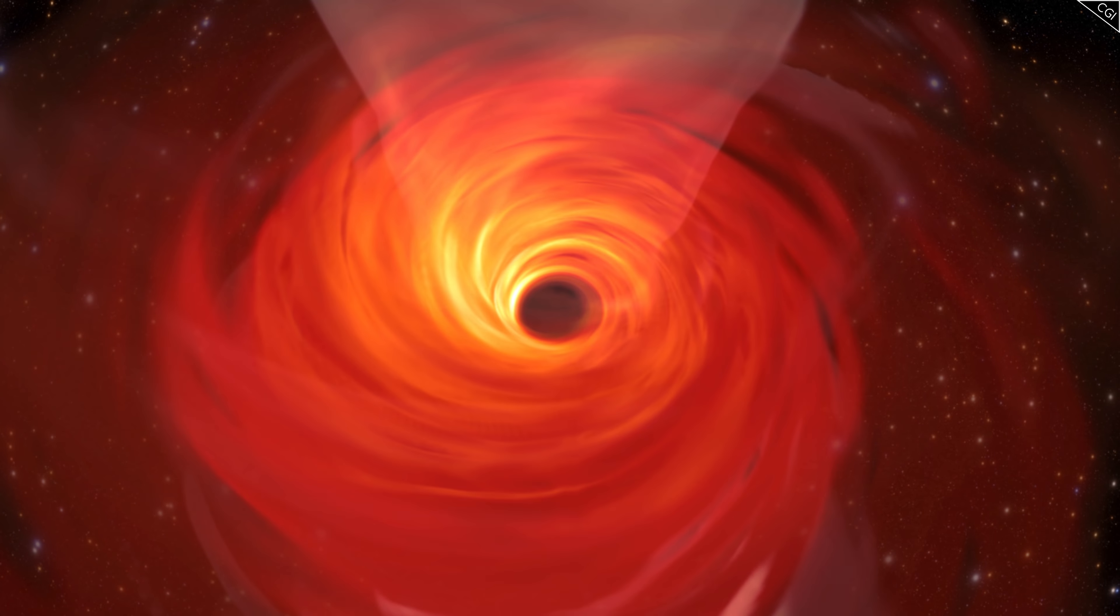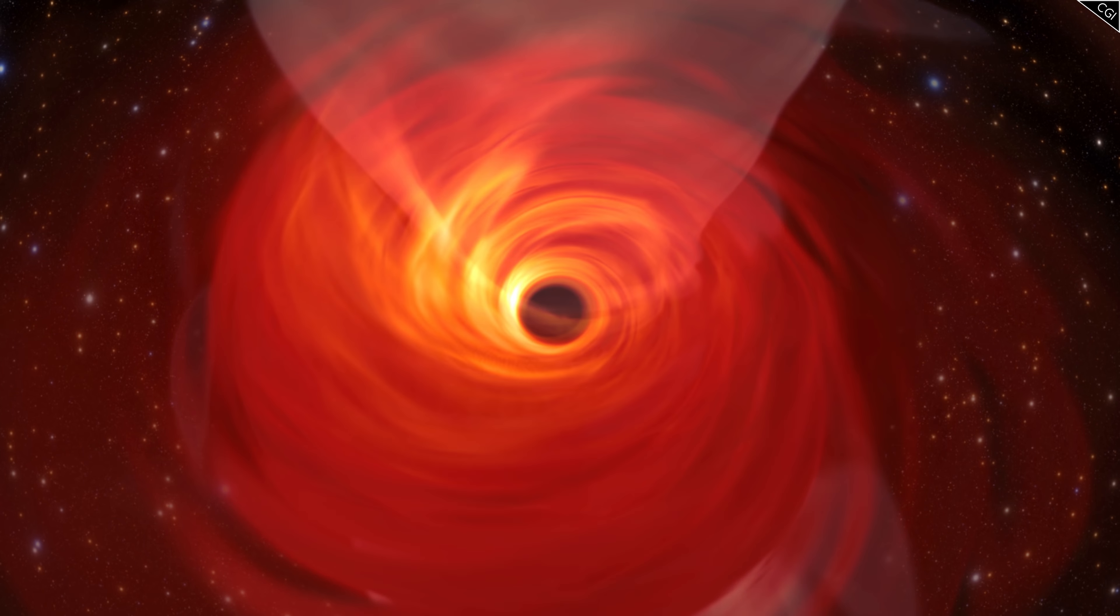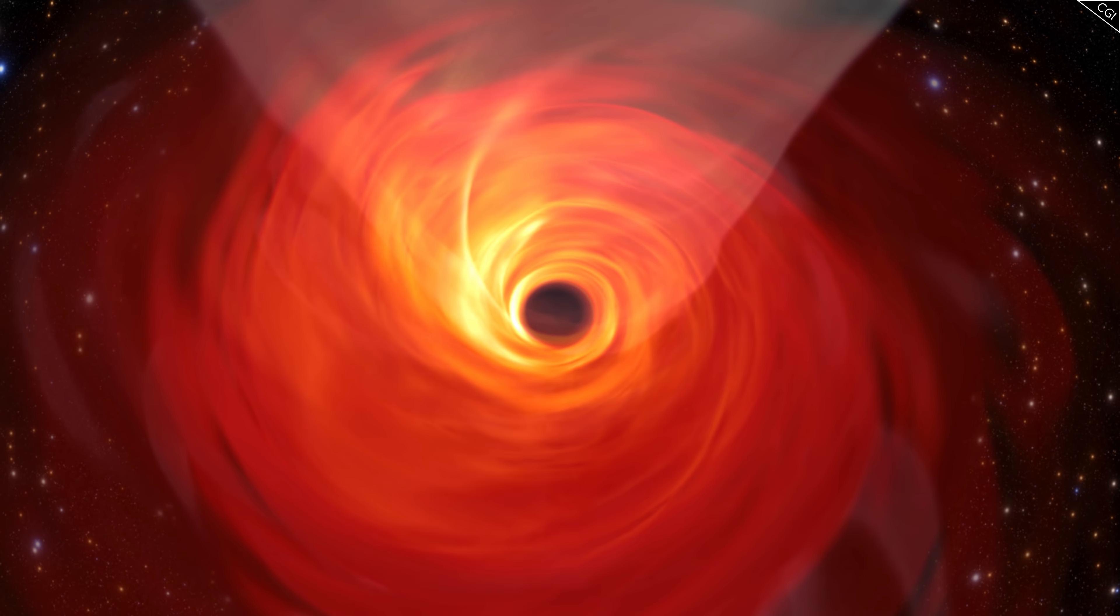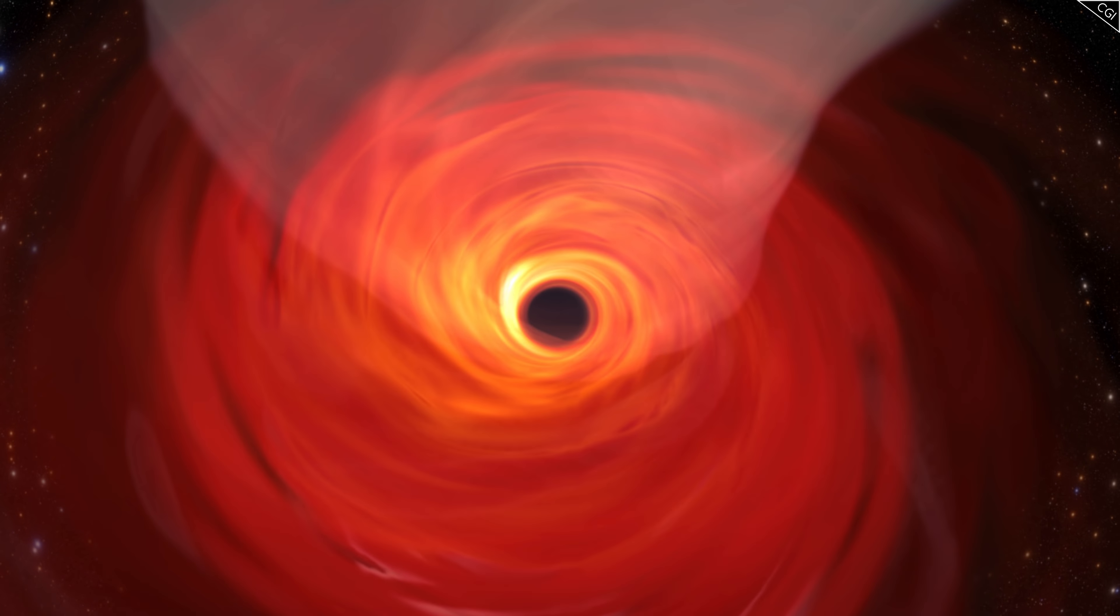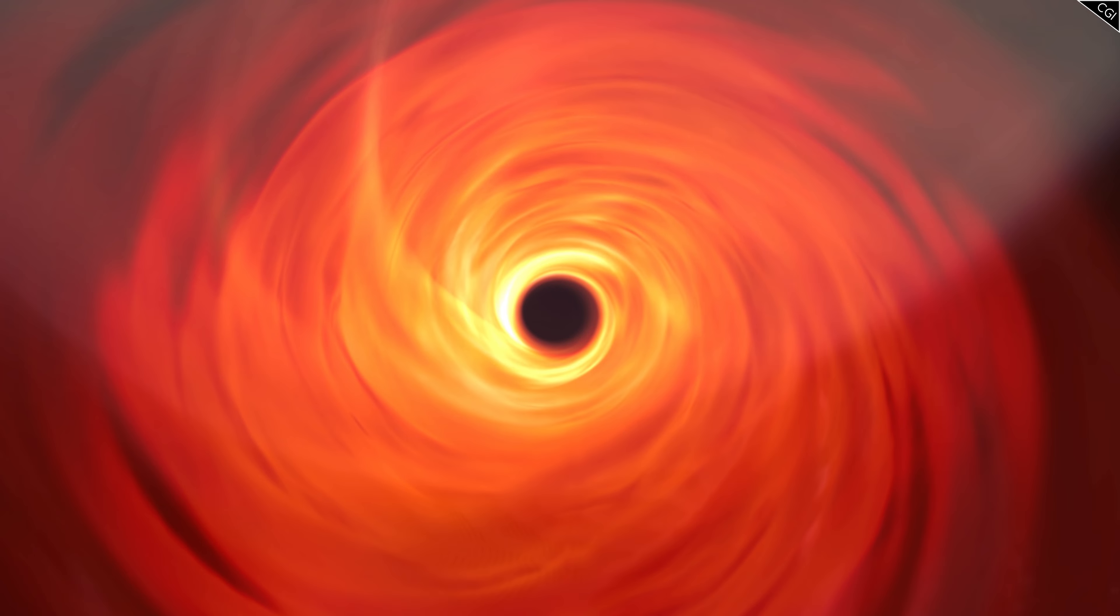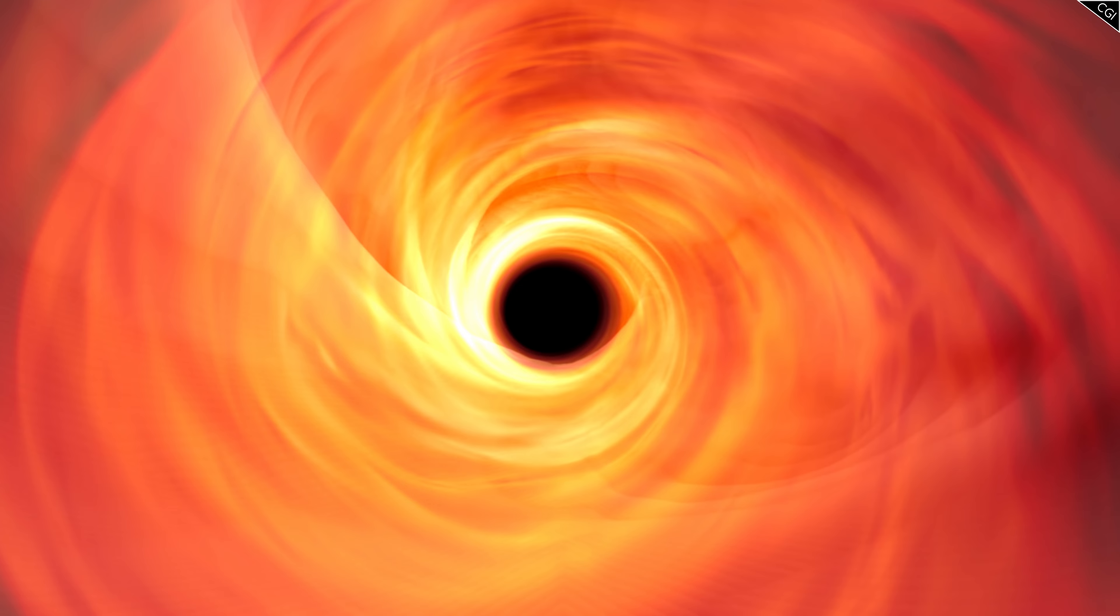As the material in the accretion disk orbits and falls inwards, the friction from the material in the disk rubbing together creates energy so intense that a quasar can be thousands of times brighter than our Milky Way.